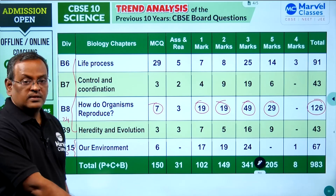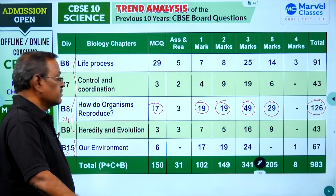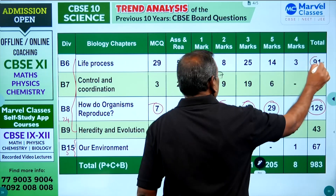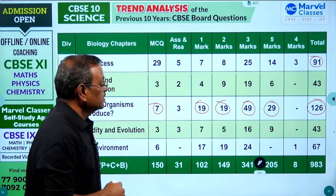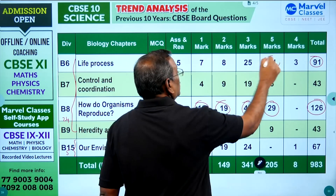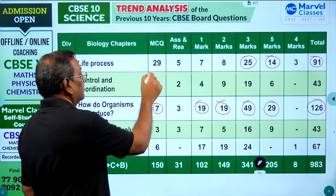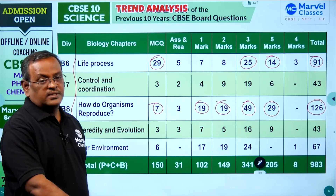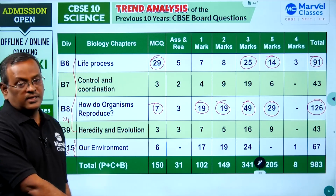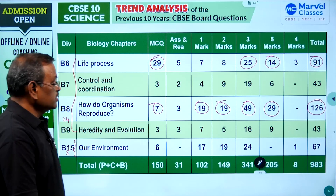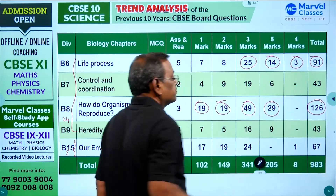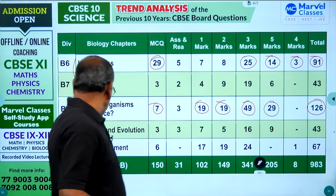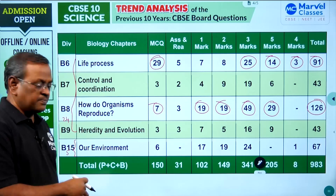The next maximum weightage chapter is Life Processes, with 14 five-mark questions, 25 three-mark questions, and 29 MCQ questions. You have to concentrate on all the basic concepts to get full marks in MCQ. There are also 3 case study questions from this chapter in the last 10 years.